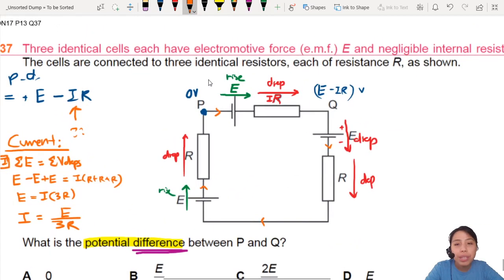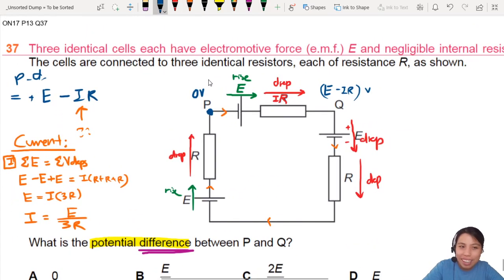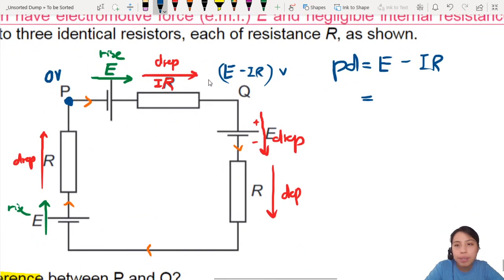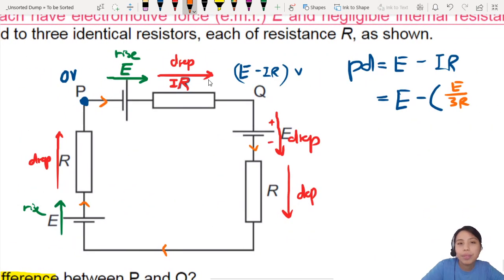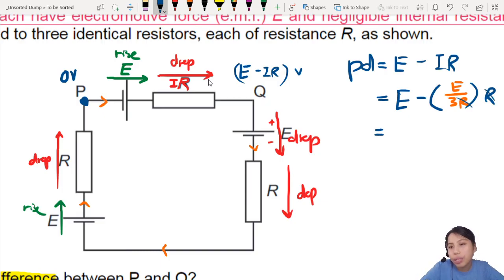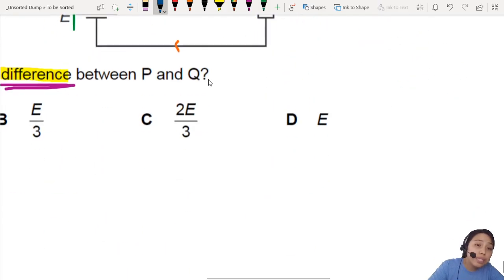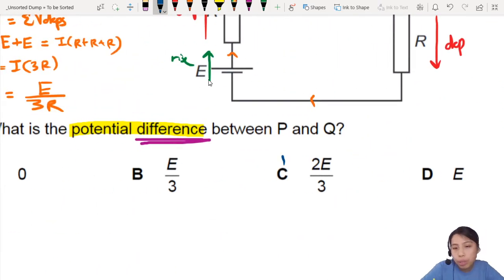So if I want to find the answer now, the potential difference is E minus IR. I just found that I equals E over 3R, so I substitute that in. The current E over 3R times R — R and R cancel out — gives E minus one-third E, which equals two-thirds E. And that is my final answer for the potential difference between P and Q: 2E/3.